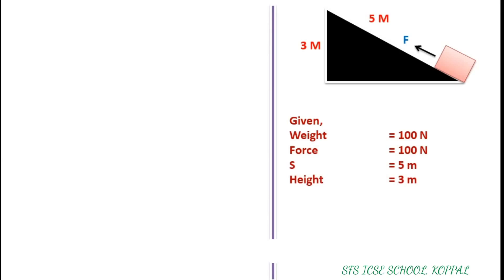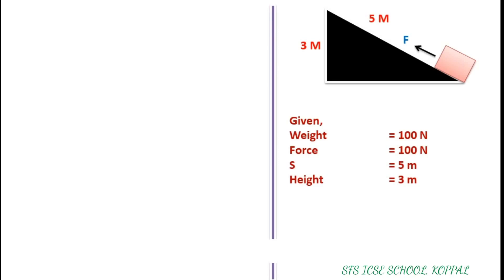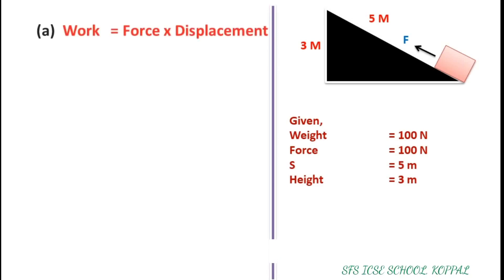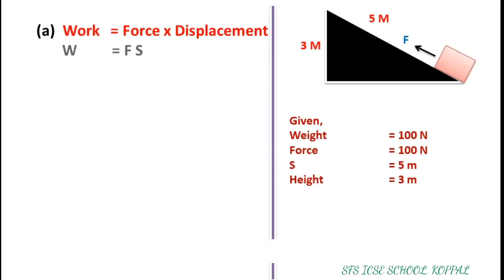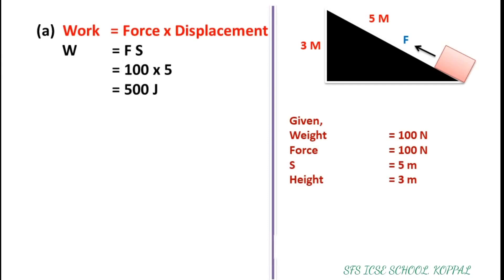In part A, we have to find out the work done in moving the block 5 m along the slope. We can see that force and displacement are in the same direction. So the formula is: work done equals force into displacement. Putting values, force is 100 N and displacement is 5 m, we get 100 × 5 equals 500 Joules.